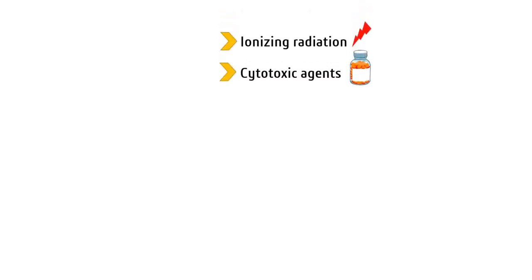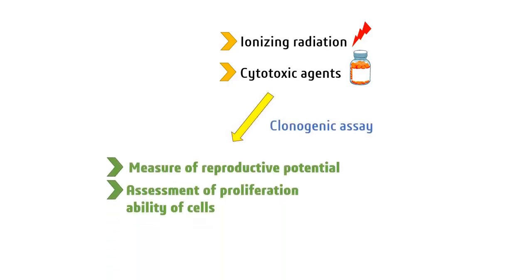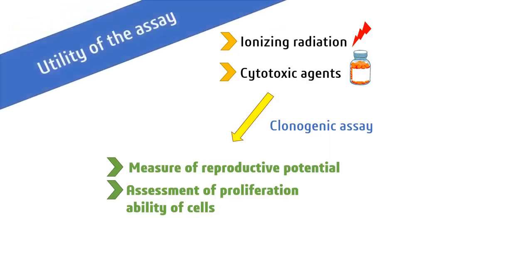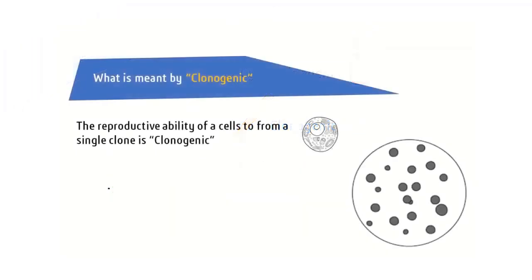Hello everyone, hope you are all good. Welcome to Beginners Biology. In this video, let's discuss the clonogenic assay. When we have treated a set of normal cells or cancer cells with drugs or ionizing radiation, we need to know the effect on the cells' ability to survive and reproduce. The clonogenic assay is one such assay to assess the reproductive potential and proliferation ability of cells.